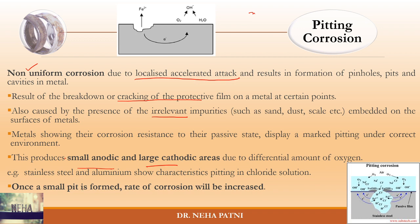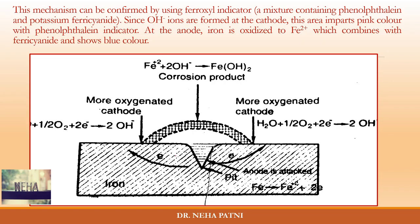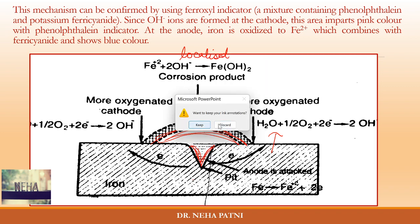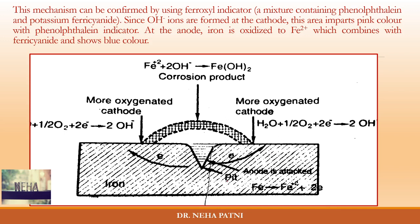Once a small pit is formed, the rate of corrosion increases. For example, if a drop of solution or a dust particle is present on the metal surface, that area becomes the anode, iron gets corroded, and a pit cavity forms. Since corrosion is localized, it repeatedly occurs at the same spot — the same area remains anodic, the pit intensifies, iron is lost again, and the pit grows larger with each cycle.